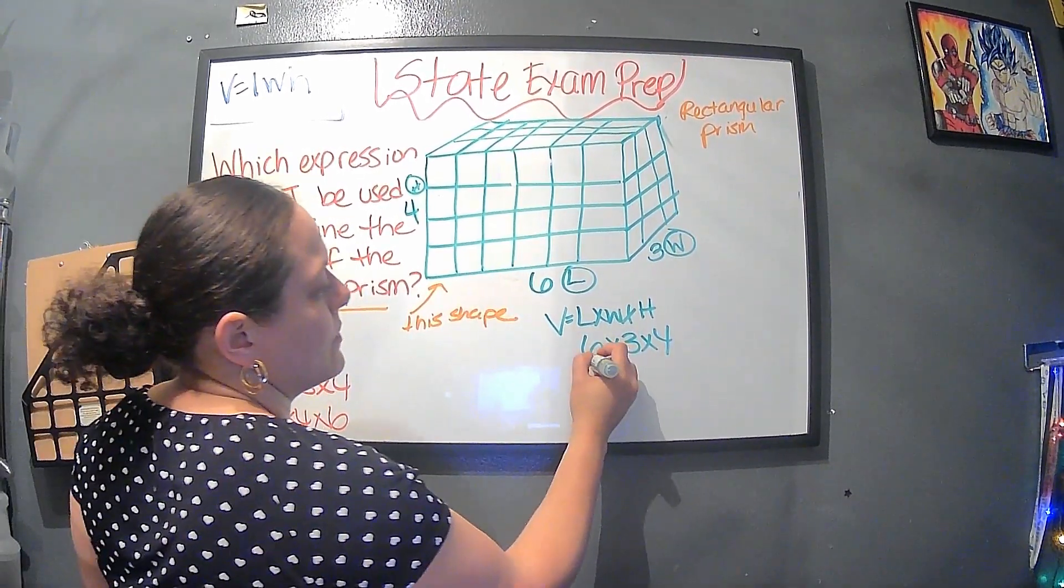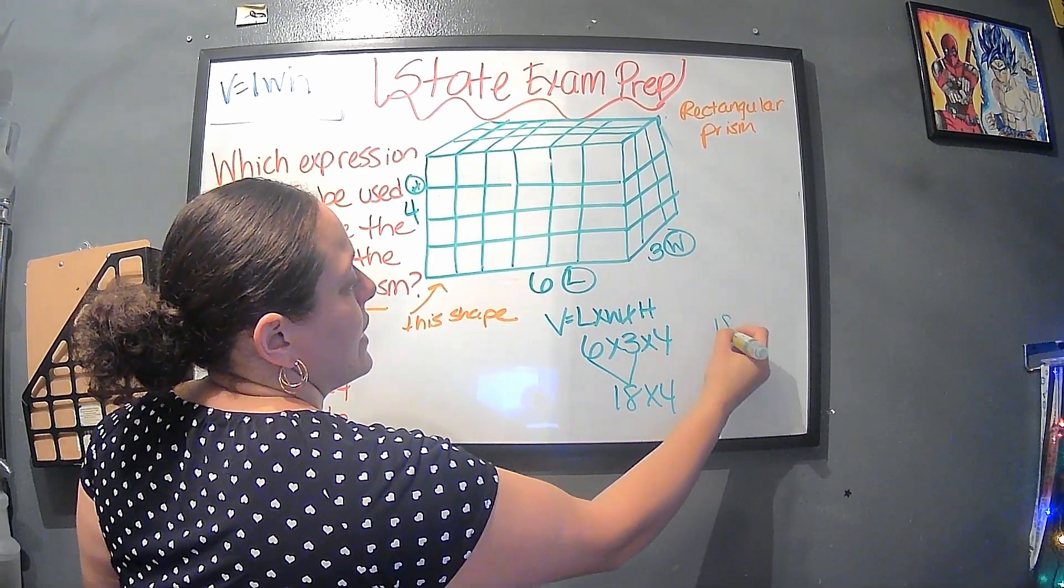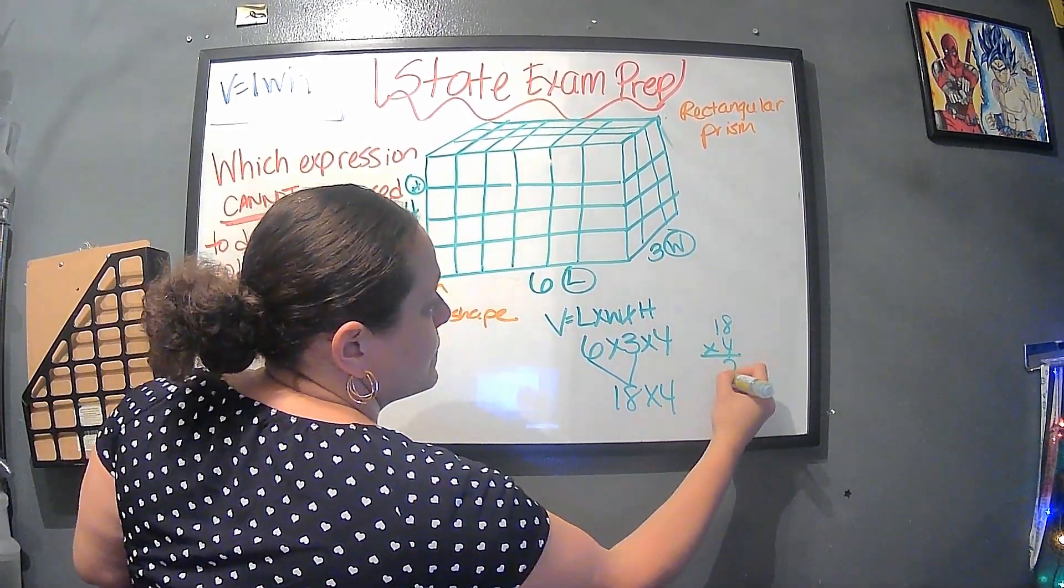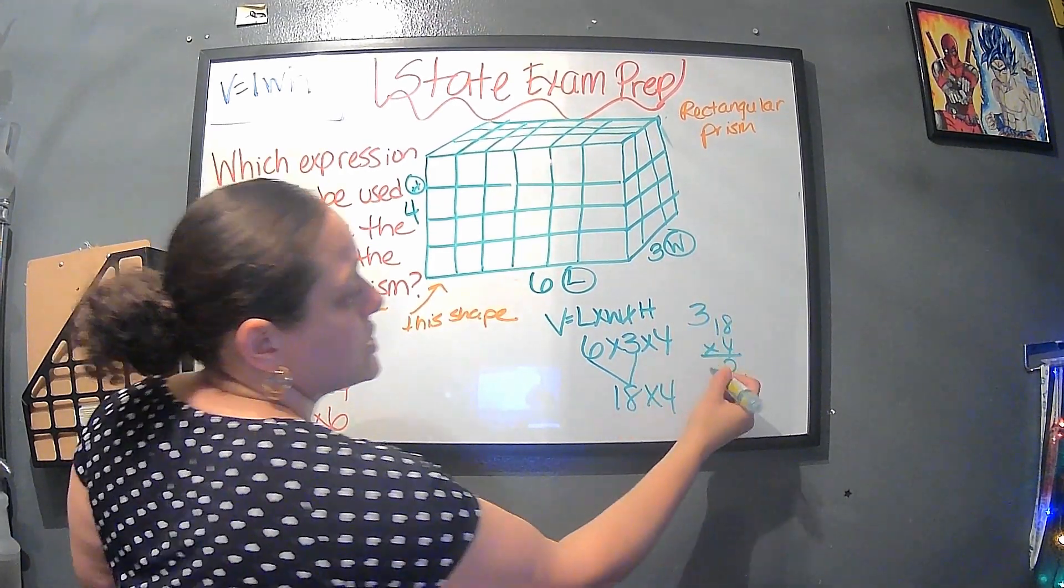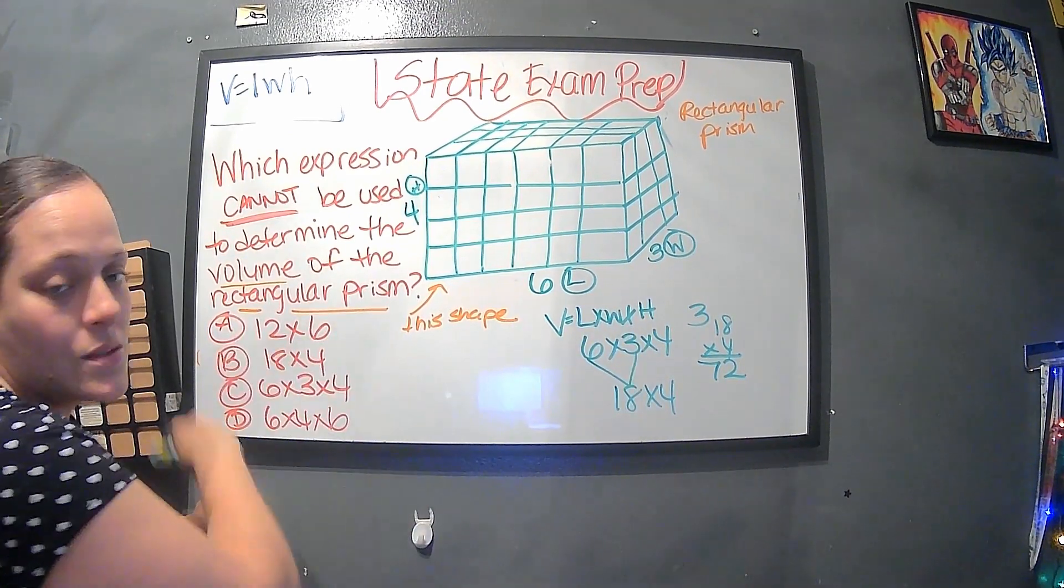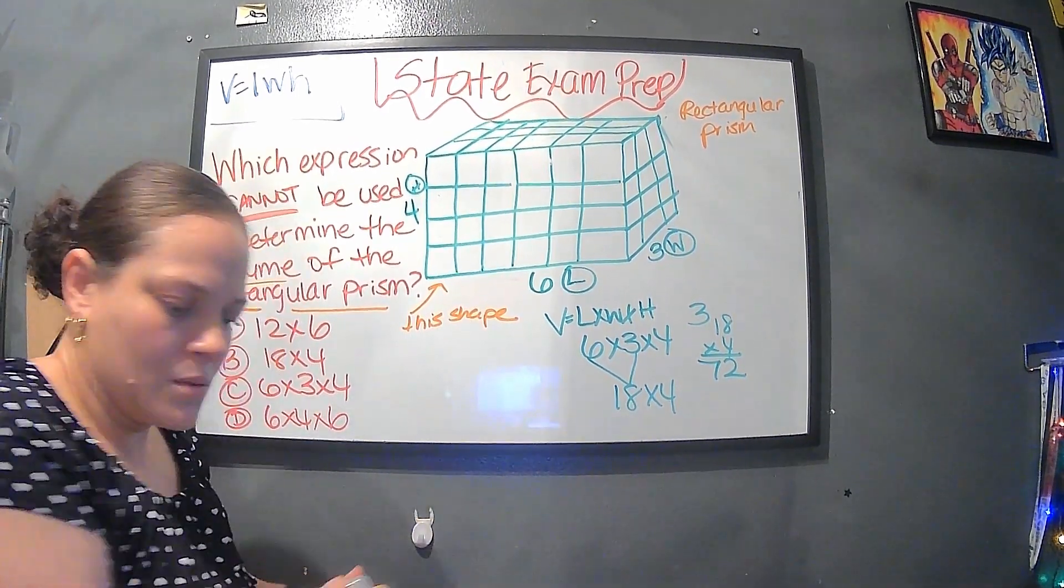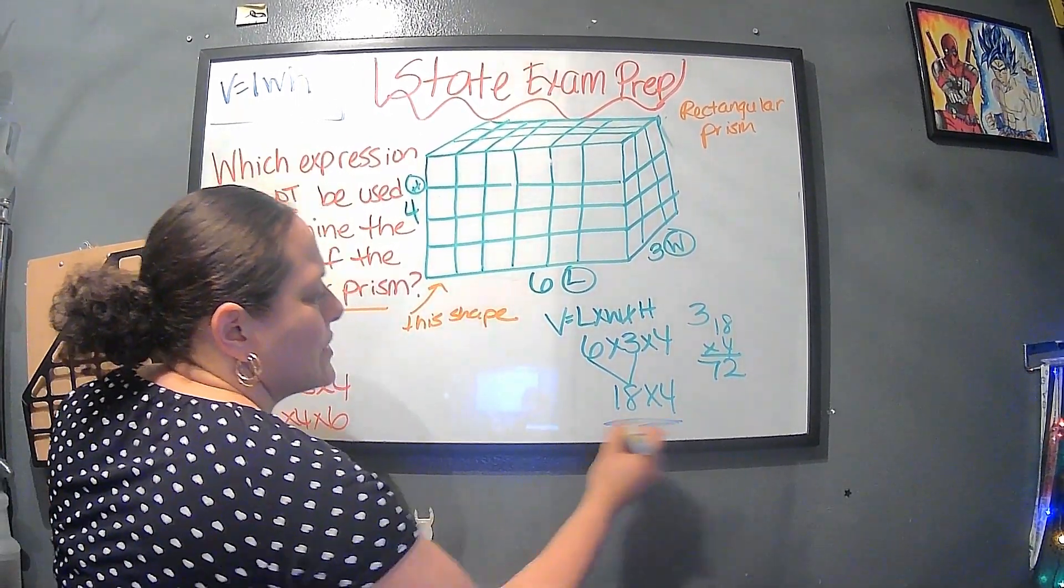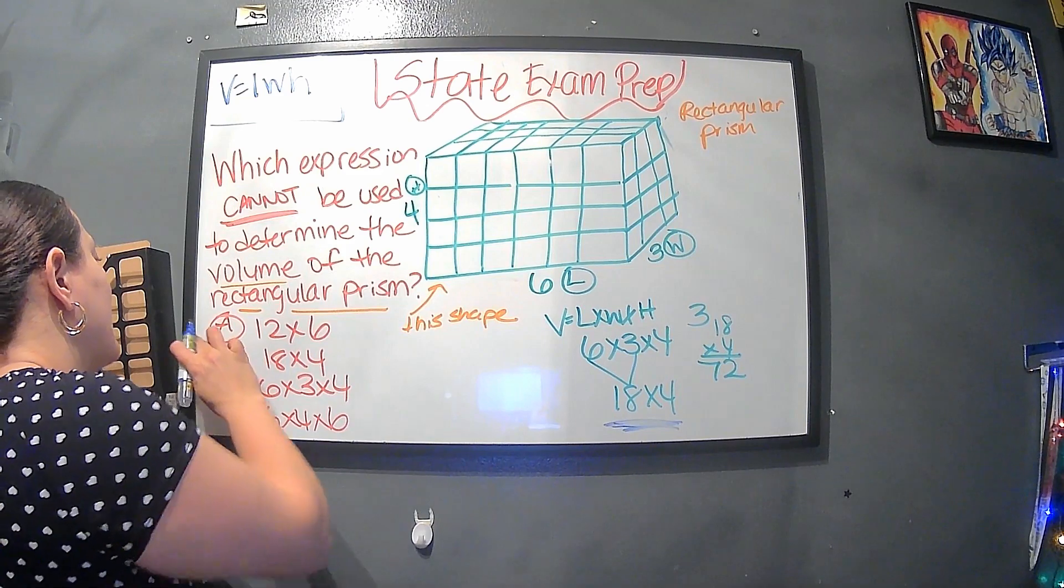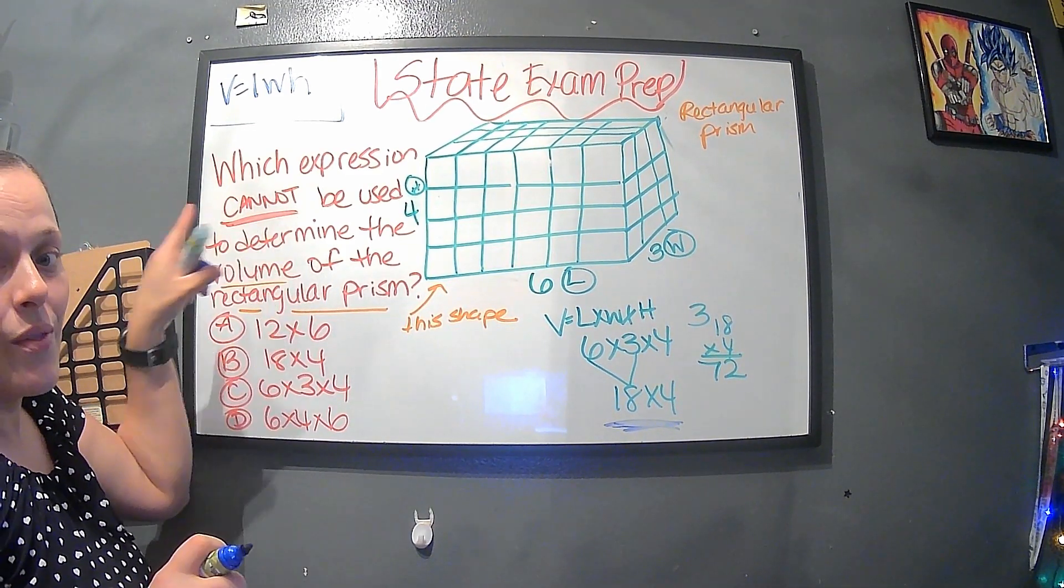If we did that, six times three is 18 times four. If we do 18 times four, that would be eight, 16, 24, 32. Four times one is four, plus three is seven. So we have 72. So far, you're not going to see any of that there, because they want us to play around with numbers. But if you look at this, don't you see that this is in the answer? I see it right here. So that means this one would be one that would help you get the volume. That means it won't be the answer for this problem because remember, the cannot.